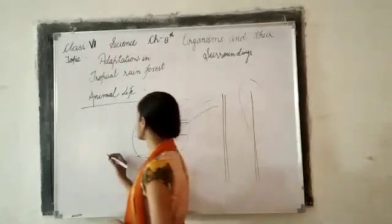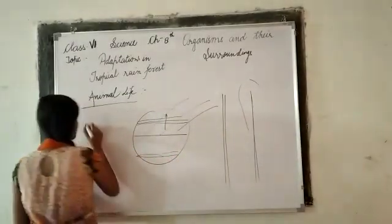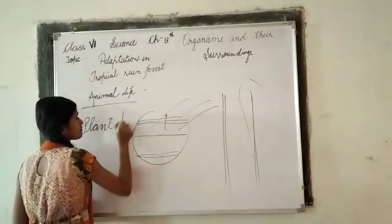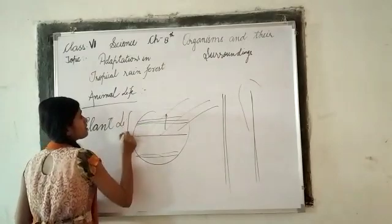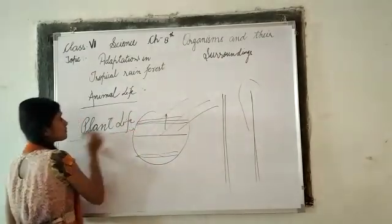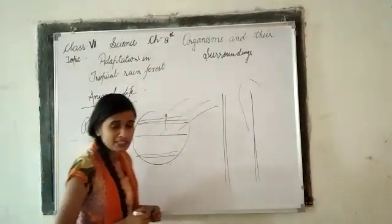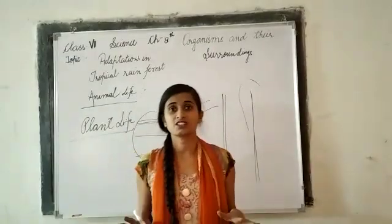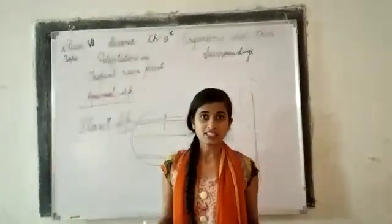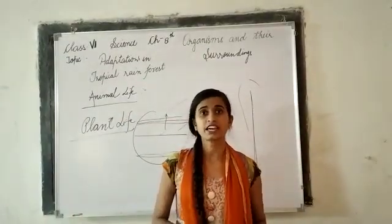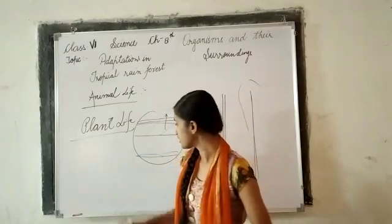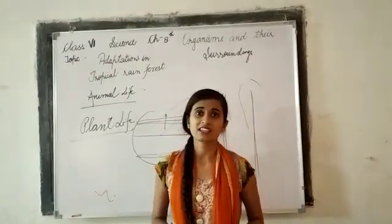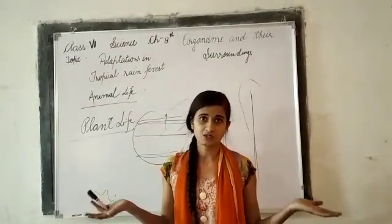Now we will talk about plant life. As I told you, the vegetation in tropical rainforests is very dense. It is such a dense jungle that if you go down below the canopy, you will feel like it is nighttime — it is that dense.